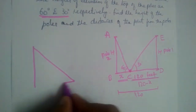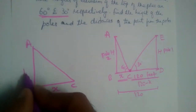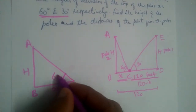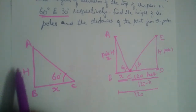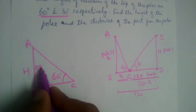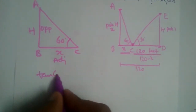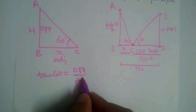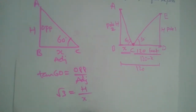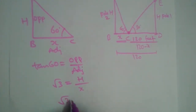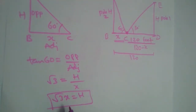Let us draw triangle ABC, where X is the base and H is the height of the pole, with angle 60 degrees at C. To angle 60°, AB is the opposite side and BC is the adjacent side. Opposite over adjacent gives tan. So tan 60° equals H divided by X. Since tan 60° is √3, we get H equals X√3.